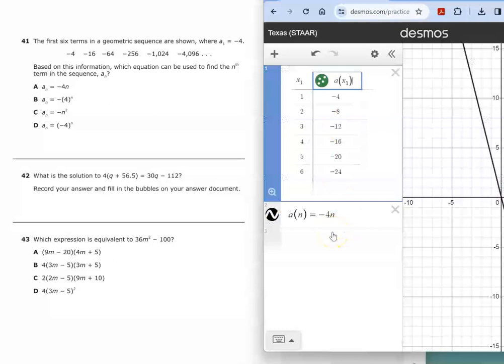And what that's doing is it's putting one, two, three, four, five, six into this function and evaluating to give us the terms of the sequence. And you'll notice the first term is correct, but none of the rest are correct. So that means answer choice A is not correct.